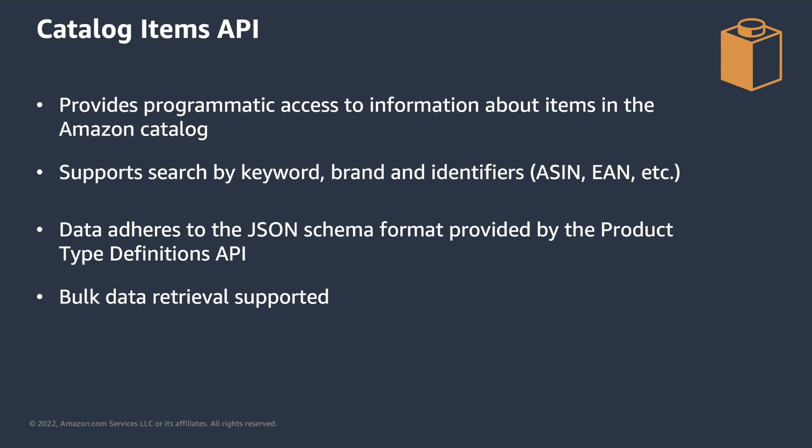Something important about this API is that the data adheres to the JSON schema provided by the Product Type Definitions API. This means that the data you get in the API response can be used to feed a listing submission. Finally, with its bulk functionality, the API supports use cases and workflows that require access to large amounts of data.